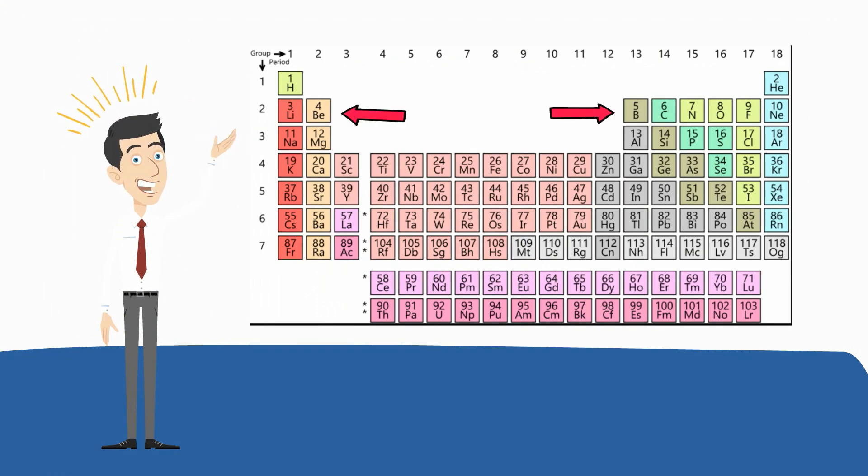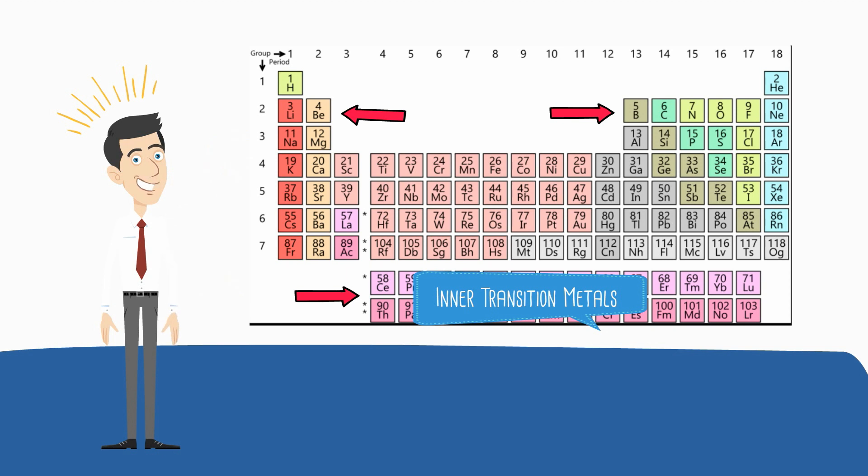The lanthanides and actinides at the bottom of the table are sometimes known as the inner transition metals because they have atomic numbers that fall between the first and second elements in the last two rows of the transition metals.